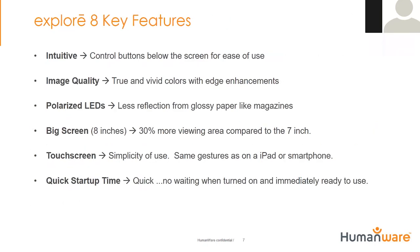Key features for the Explorer 8: Intuitive controls — all the buttons are below the screen for ease of use, placed where your thumbs are. Image quality with true vivid colors and edge enhancement. Polarized LEDs mean less reflection when viewing glossy paper. A bigger screen — 8-inch — which translates to 30% more viewing area compared to a 7-inch, a very nice advantage over the competition. Touchscreen simplicity of use with the same gestures as an iPad or smartphone, and quick startup time.